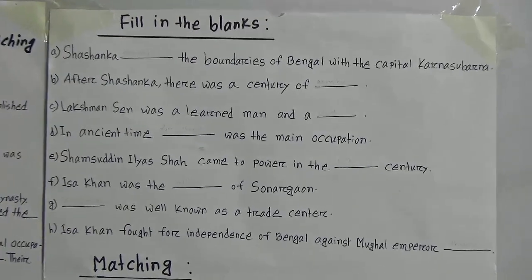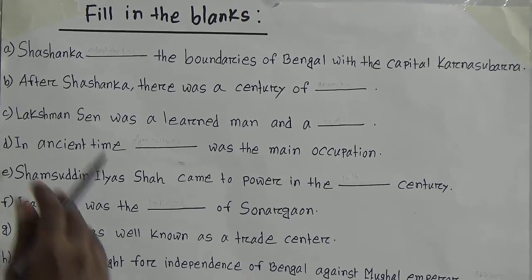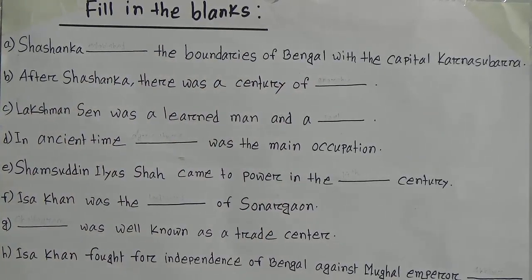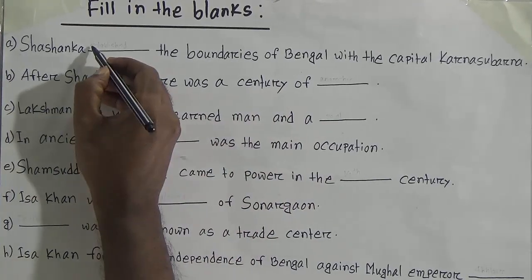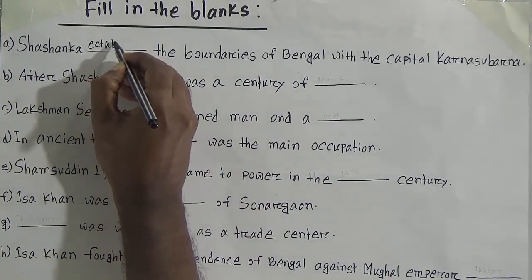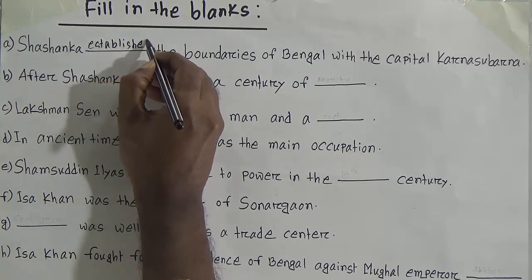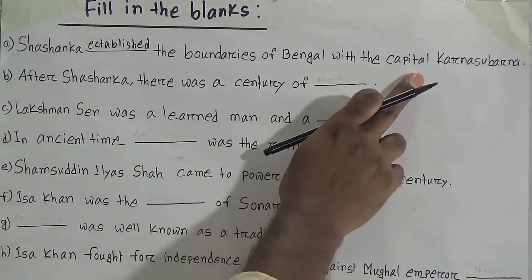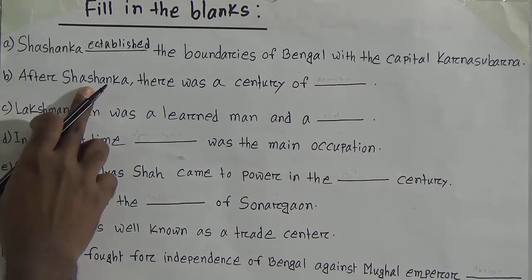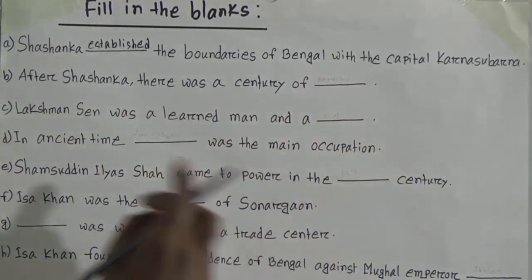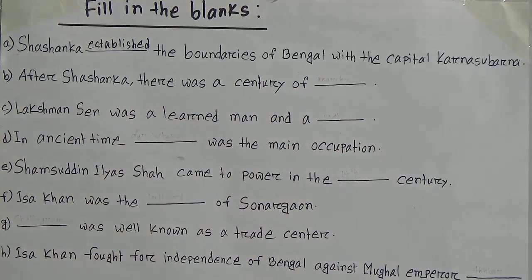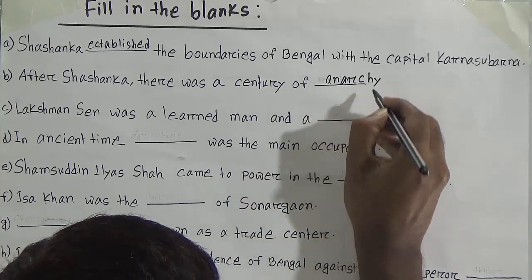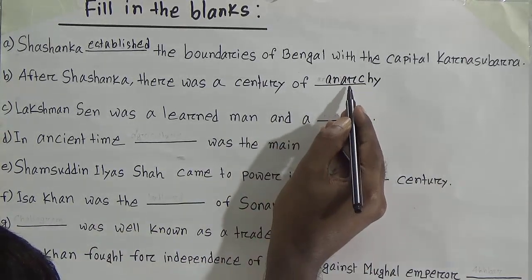Now we will go to fill in the blanks. Look at the first fill in the blanks. A: Shoshonko blank the boundaries of Bengal with capital Karno Subarno. Answer: Shoshonko established the boundaries — E-S-T-A-B-L-I-S-H-E-D. I have written here 'established.' B: After Shoshonko there was a century of blank. Answer: after Shoshonko there was a century of anarchy — A-N-A-R-C-H-Y.